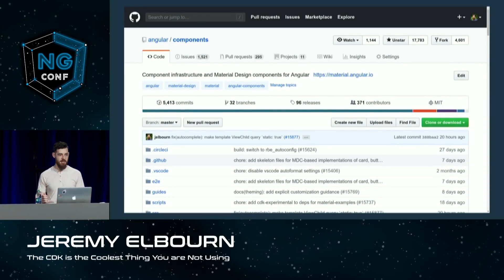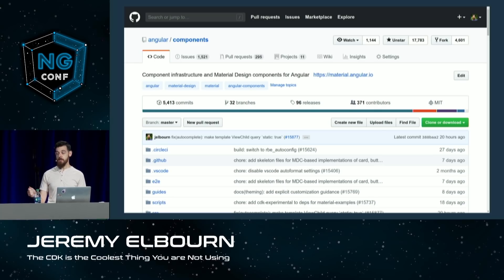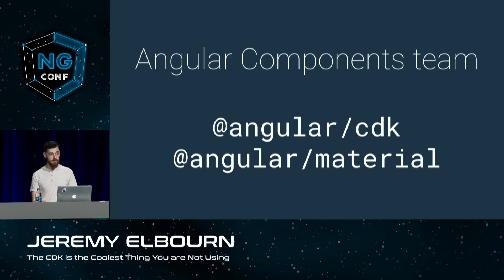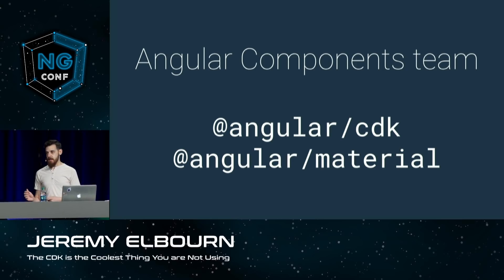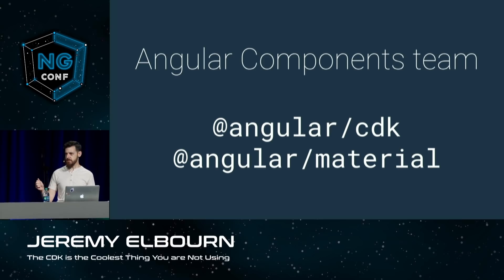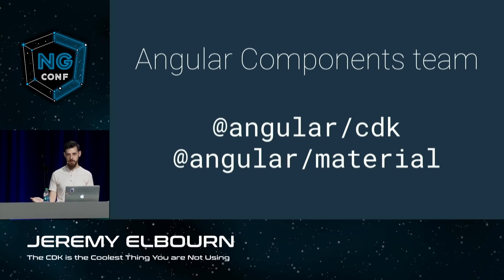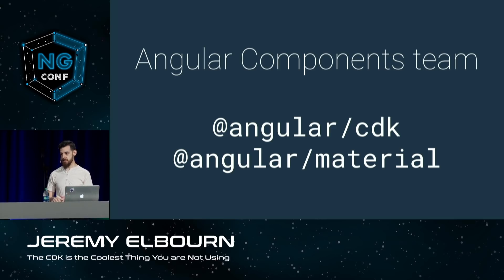I'm hoping that this signals that we are taking on a broader set of work — not just material design experiences but any kind of tools that developers might need to build their own UI components. We've also changed how we refer to our part of the Angular team. For years we were the Angular Material team, but we now refer to ourselves as the Angular Components team. I want to clarify that this does not affect our packages or any of our APIs — we still have Angular CDK and Angular Material on NPM. This is just an organizational change signaling that we're trying to do more than just material design experiences.